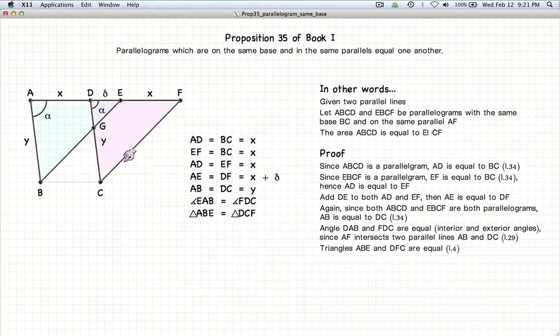Now if we look at our two triangles, we have length y, angle alpha, length x plus delta. We have length y, angle alpha, x plus delta.